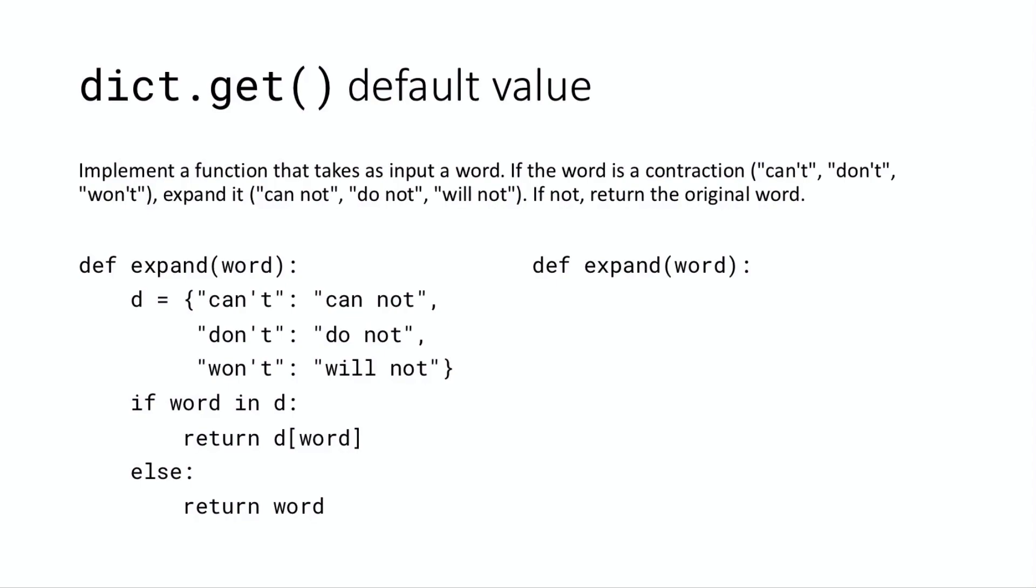And so let's just look at the code on the left, the multi-line solution. Basically the idea is we define a dictionary that contains all of the words that we need to change. So the keys are can't, don't, and won't. And the values are the expanded forms cannot, do not, and will not.